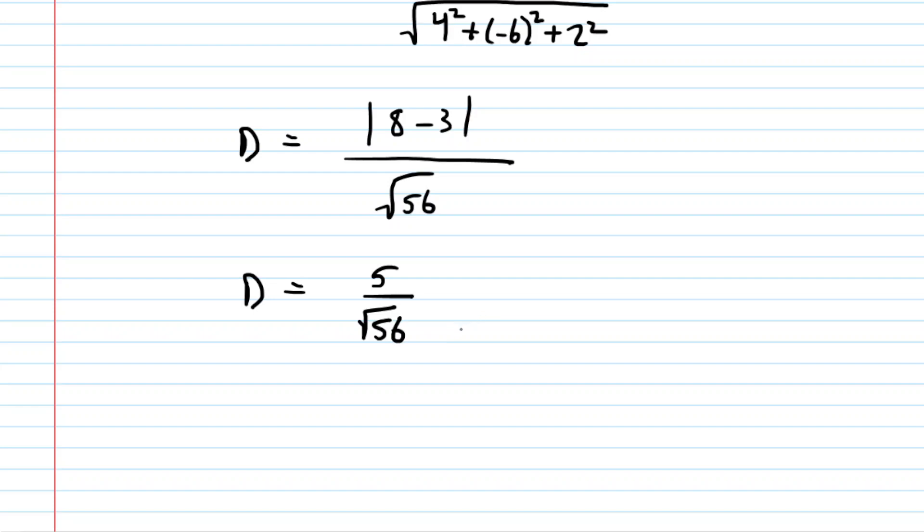If your teacher doesn't like radicals in the denominator, we can do a little bit of cleanup here. We can rewrite the square root of 56 as the square root of 4 times the square root of 14. The square root of 4, of course, is 2.